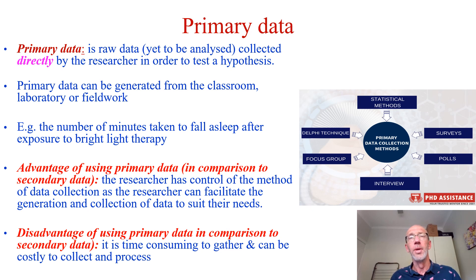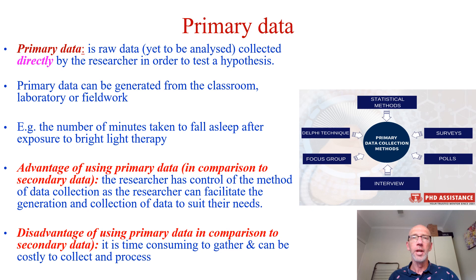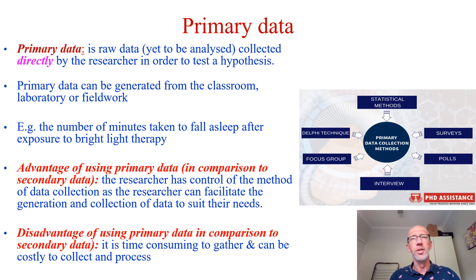The limitation is the time, cost, and effort involved. Also, sometimes in research we might need to generate data that is sensitive or bordering on unethical — for example, if we're trying to get data about victims of crime or abuse. So in those situations, it might actually be more practical and more ethical to gather secondary data instead.